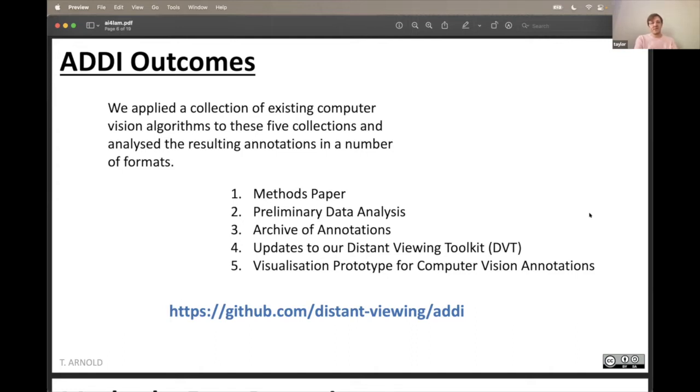The output of this includes a couple of papers, a long methodology paper, some beginnings of different data analyses. All the annotations we've put online and made available. So you don't need to run the computer vision algorithms yourself if you want to look at the annotations. We have all the code available and much of it's been wrapped up in this Python software we've been working on called the Distant Viewing Toolkit. And finally, we have a prototype visualization of how these can be used to explore the images in a different way. All of that's available and these are all released under open source or Creative Commons licenses.